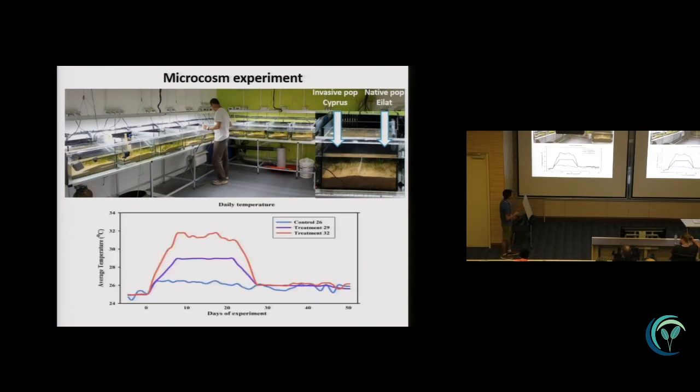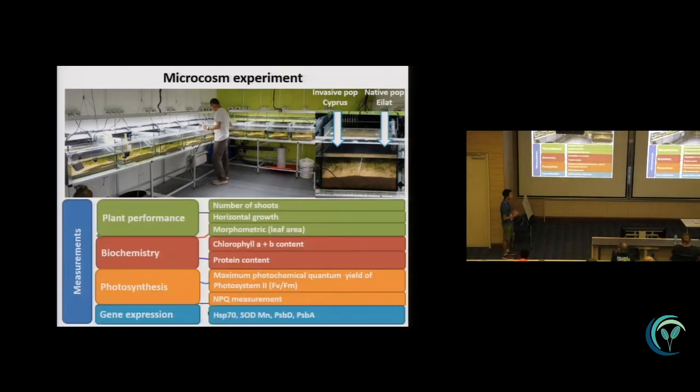What we did, we exposed the plants to increasing temperatures. We exposed the plants to 29 and 32 degrees to simulate the increasing temperatures with climate change. We want to see the whole picture, how the plants respond to increasing temperatures. We did a lot of measurements, including plant performance, biochemistry, photosynthesis, and also gene expression.